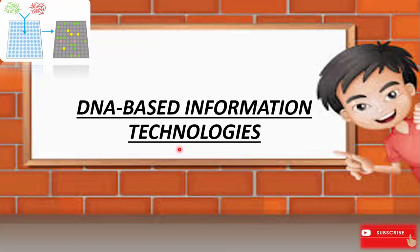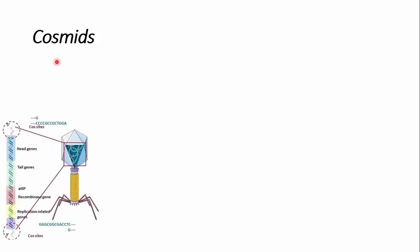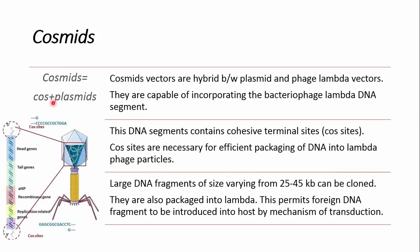In DNA-based information technologies, today we will talk about cosmids. If we break the name: cosmid equals cos and plasmid. 'Cos' came from cos sites in the lambda phage particles, while the plasmid is just a simple normal plasmid. So cosmid vectors are actually a hybrid between plasmid and phage lambda vectors, and they are also capable of incorporating the bacteriophage lambda DNA segment.